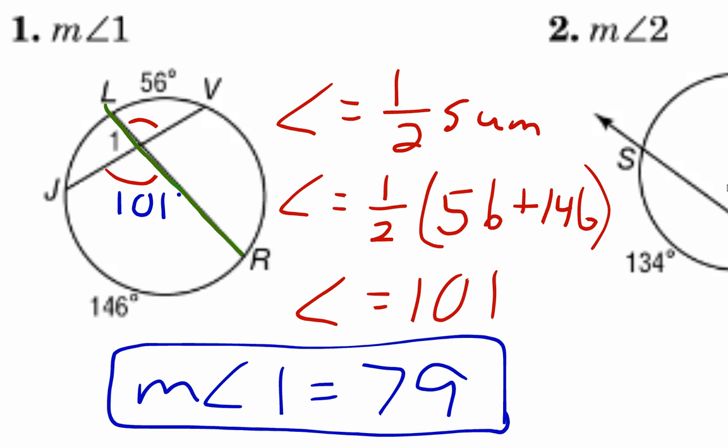101 plus 79 makes 180, so the measure of angle one is 79 degrees. Remember, when the intersection is inside the circle, the angle is half of the sum of the arcs.